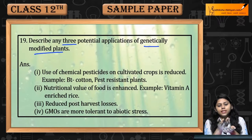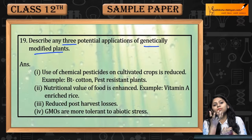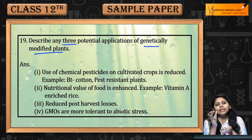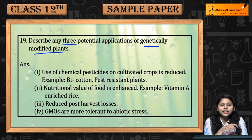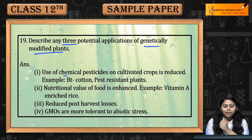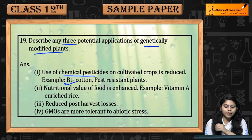Genetically modified pest resistant plants already have pest resistance built in, so there is no need to use pesticides on them. This means chemical pesticide use will be reduced. An example is BT cotton.